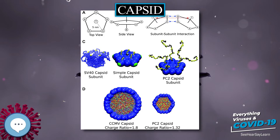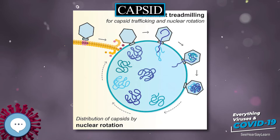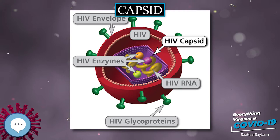The capsid encloses the genetic material of the virus. Capsids are broadly classified according to their structure. The majority of viruses have capsids with either helical or icosahedral structure. Some viruses, such as bacteriophages, have developed more complicated structures due to constraints of elasticity and electrostatics.